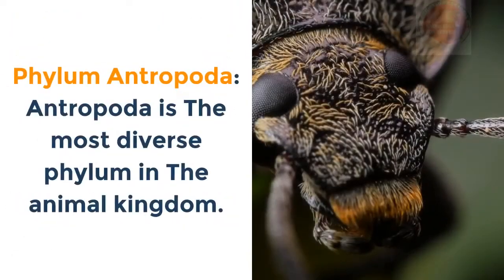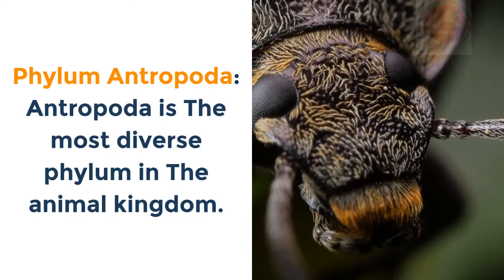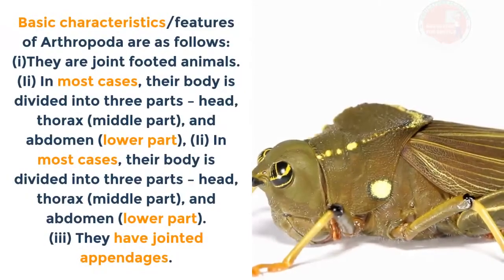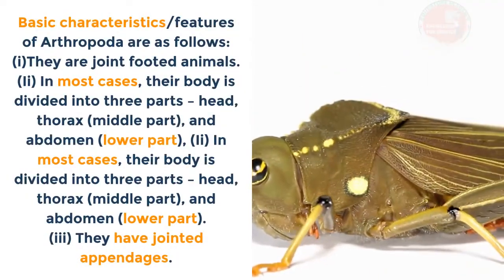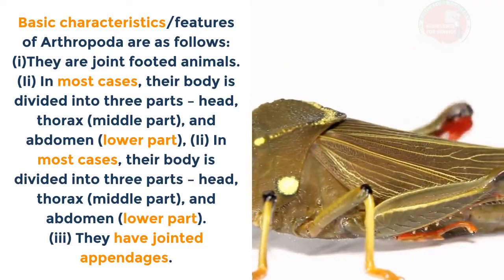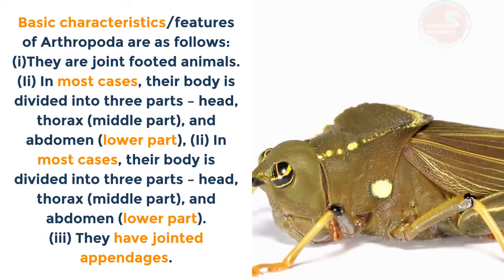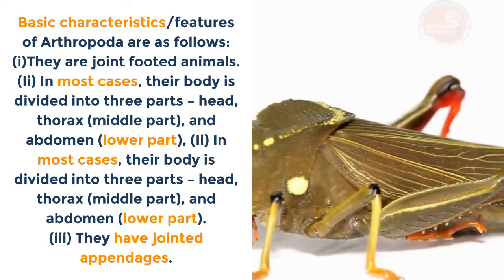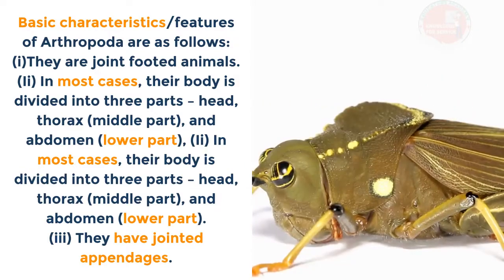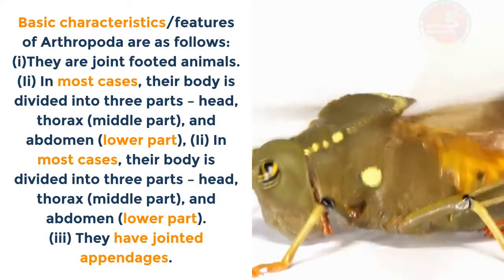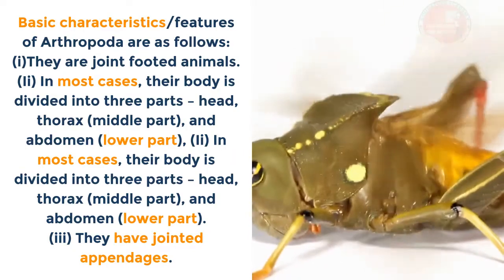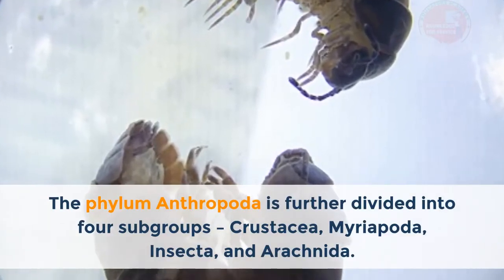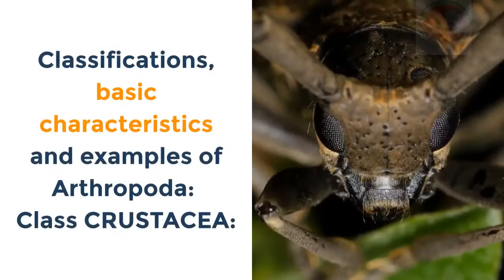Phylum Arthropoda is the most diverse phylum in the animal kingdom. Arthropods are eucoelomates with a well-developed organ system. Basic characteristics: i. They are jointed-footed animals. ii. In most cases the body is divided into three parts — head, thorax (middle) and abdomen (lower). iii. They have jointed appendages. The phylum Arthropoda is further divided into four subgroups: Crustacea, Myriapoda, Insecta and Arachnida.